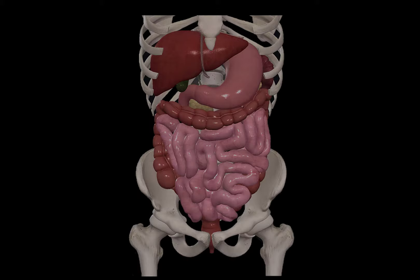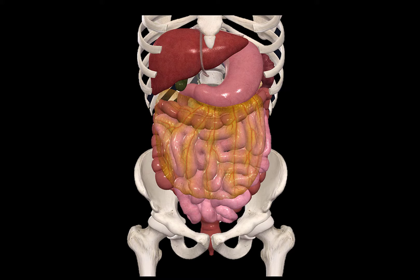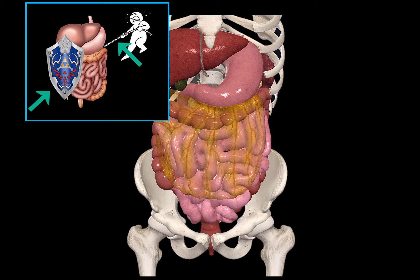Now that we've covered the anatomy of the organs in the abdominal cavity, we need something to protect them. That's what the peritoneum does. It's a serous coat that protects and fixes the organs in place, forming a smooth and wet environment in the abdominal cavity.